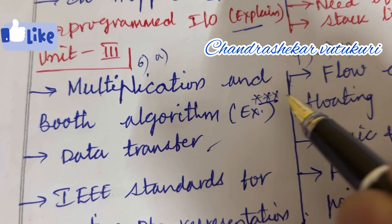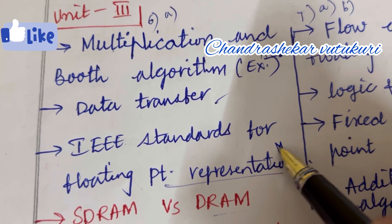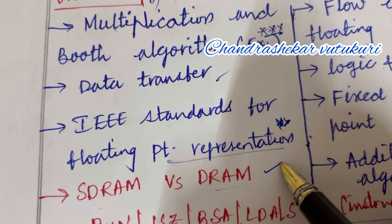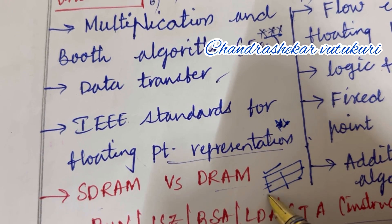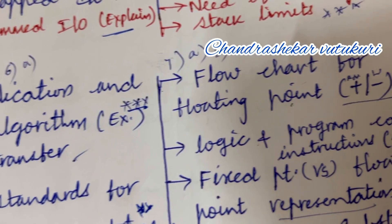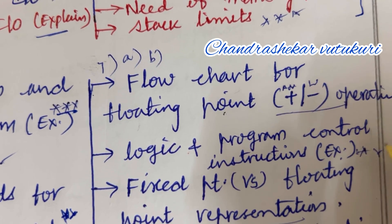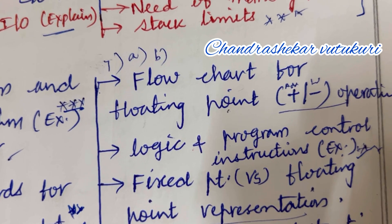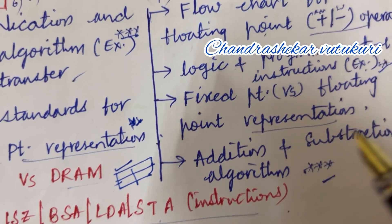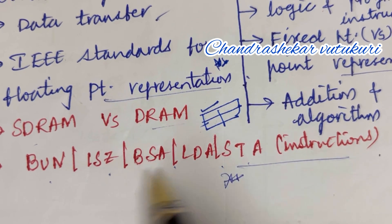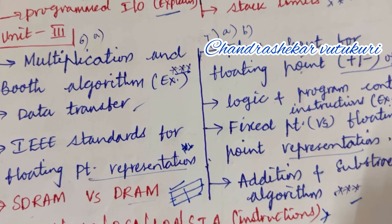Unit 2 and Unit 3 cover multiplication booth algorithms along with an example as the topmost question. Data transfer and IEEE standards for floating point representation are also set as topmost questions. SDRAM versus DRAM may be a long or short question — when differences are given, present them in a tabular column. Flowchart for floating point — its advantages, disadvantages, and operations. Logic and program control instructions along with an example may occur in 7A. Fixed point versus floating point representation, addition and subtraction algorithms may be short or long questions.